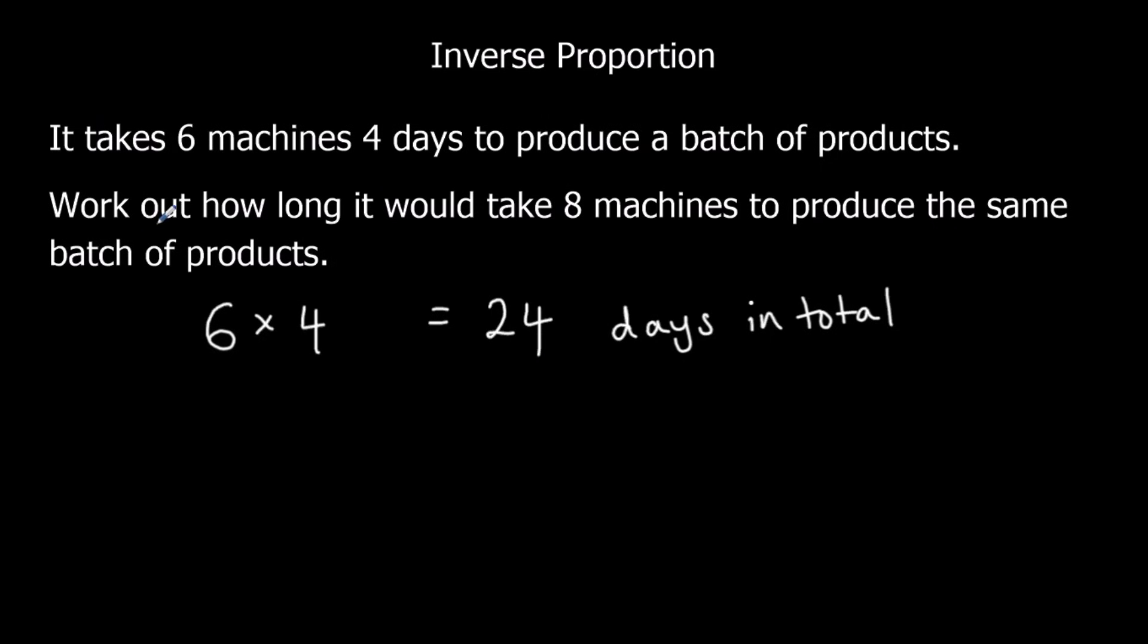We need to work out how long it would take 8 machines to produce the same products. So we've got 24 days of work we need done. We've got 8 machines to do them. So we're going to share out the 24 days between the 8 machines.